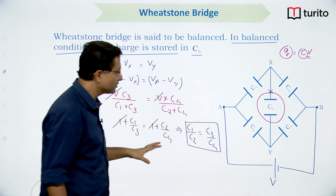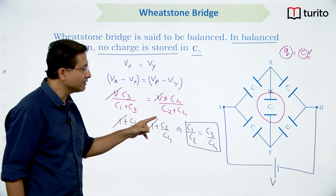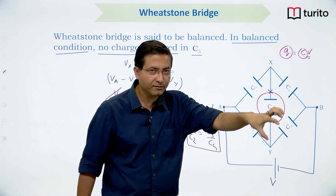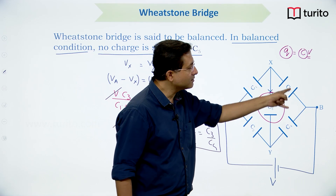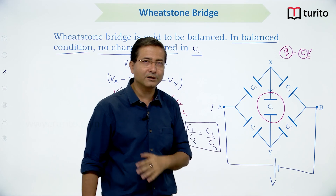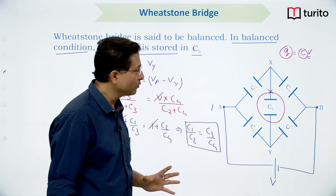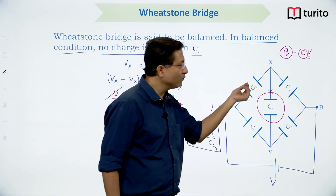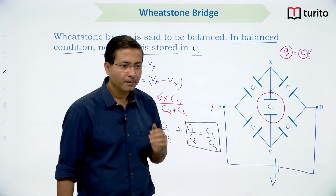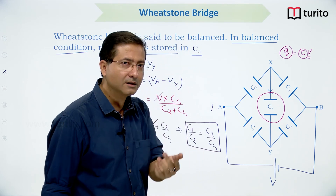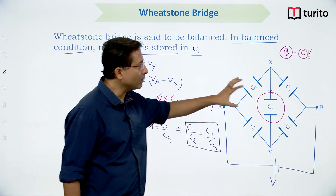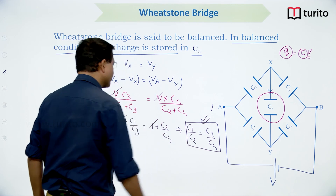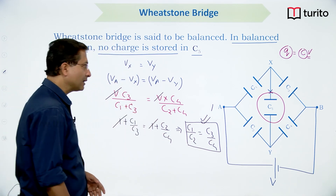If C1/C2 = C3/C4, the bridge is balanced: no charge flows through C5 so we can remove it. Then C1 and C3 are in series, C2 and C4 are in series, and those two branches are in parallel. I hope the balance condition and its benefit are clear. Maximum time circuits won't be given in the simple standard form — there may be complications in the diagram itself.